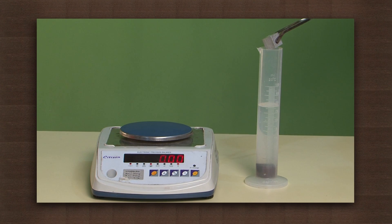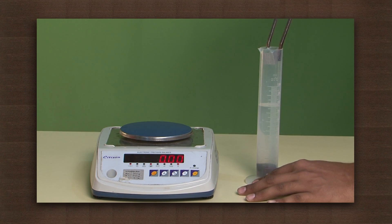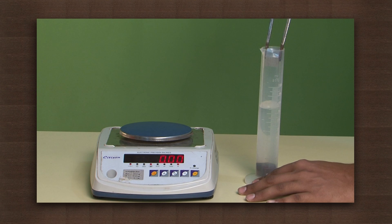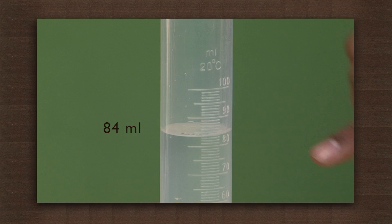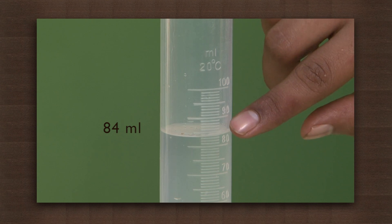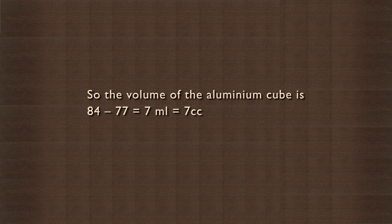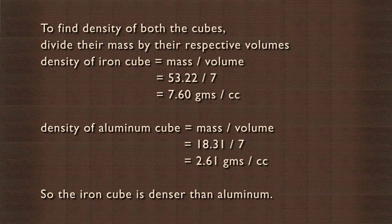Next, put the aluminum cube in water. The water level rises to 84 ml. So the volume of the aluminum cube is 84 minus 77, which is 7 ml or 7 cc.